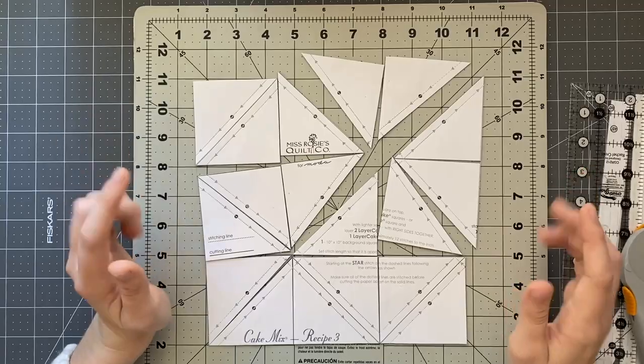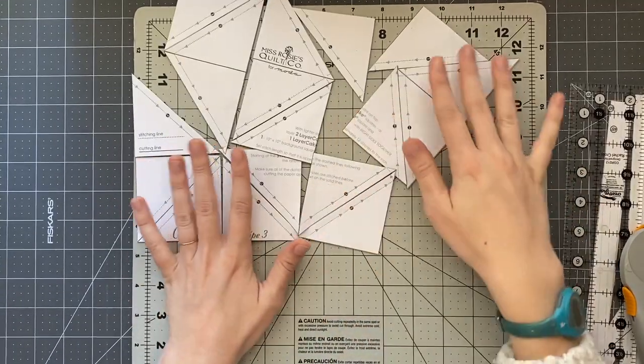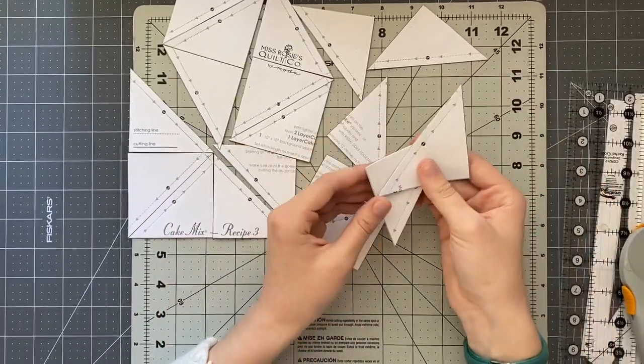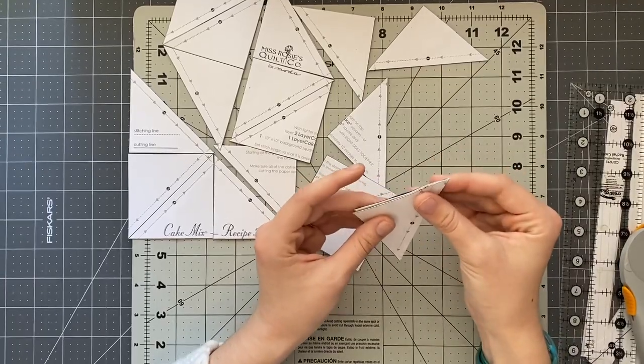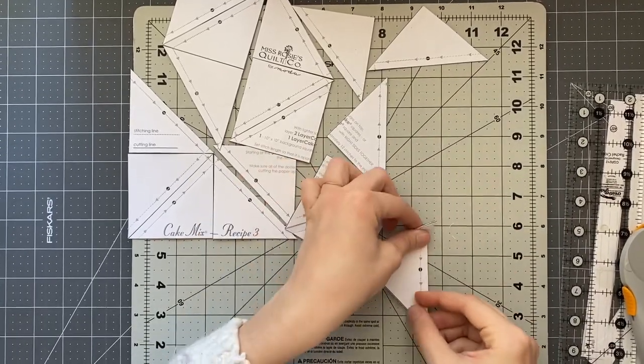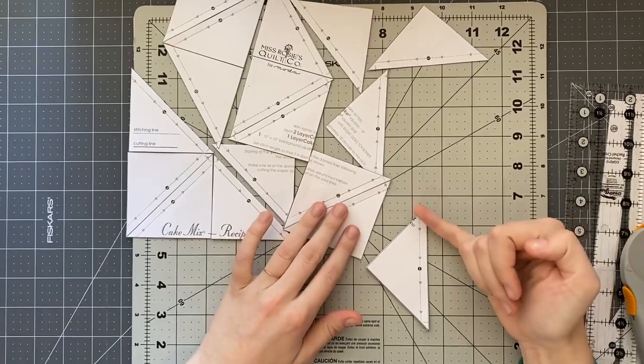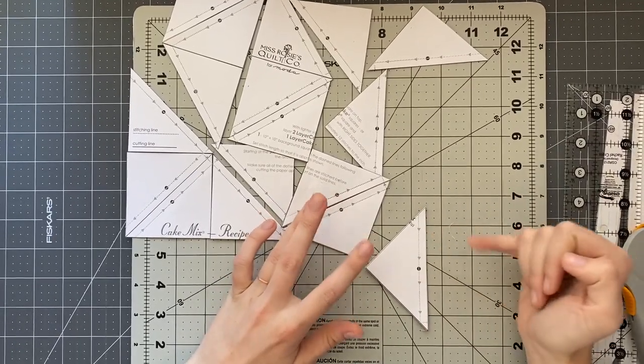So now these are all individual pieces and now we have to rip off our paper I'm just going to kind of scoot these to the side and what I like to do is take them in groups of two and I pair them up here.